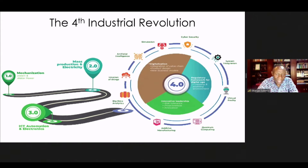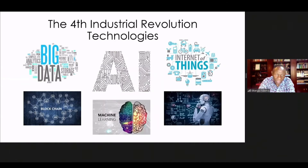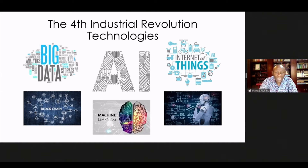From 2018, we have moved into the fourth industrial revolution — intensified digitalization, integration of value chains, product design, new business models, more intensified innovation, risk tolerance, proactiveness, innovativeness, and better regulatory mechanisms. What is going to define the fourth industrial revolution are key technologies: big data analytics, artificial intelligence, blockchain, and machine learning. These technologies have begun to take root.